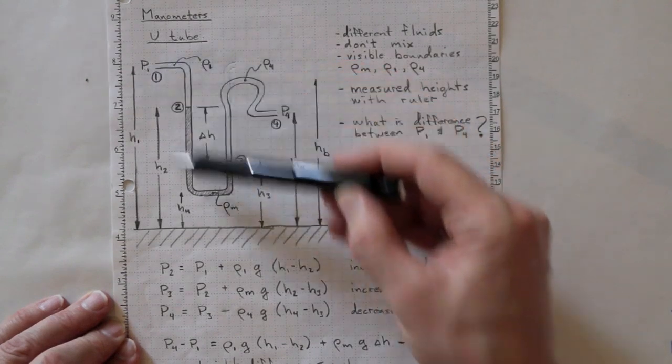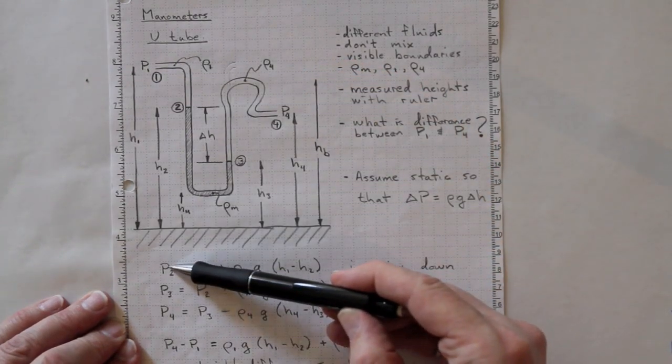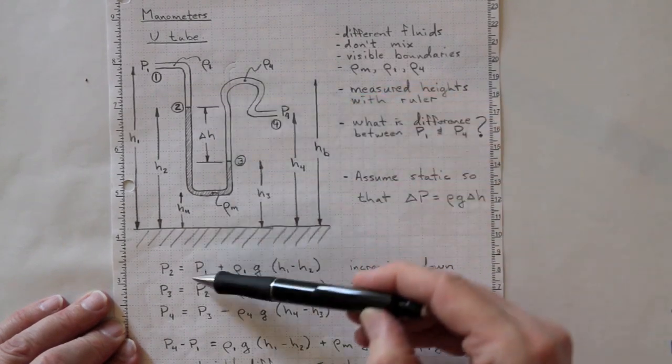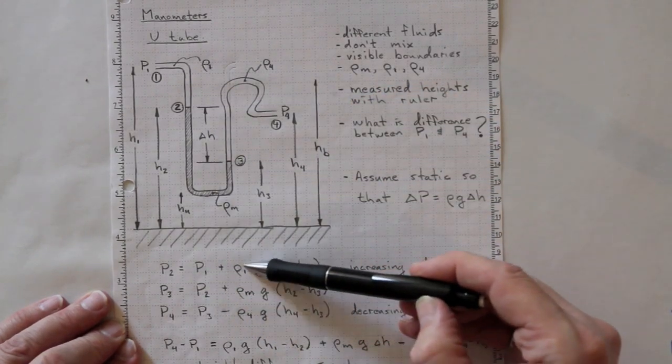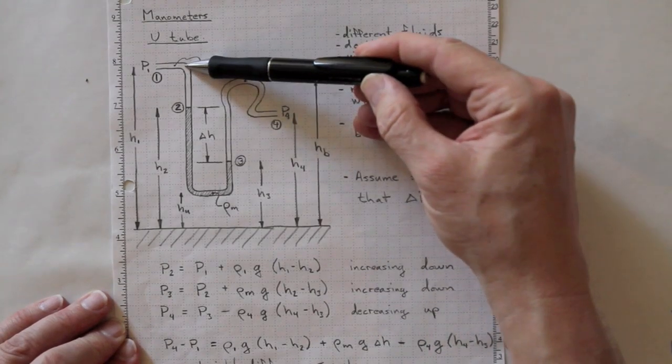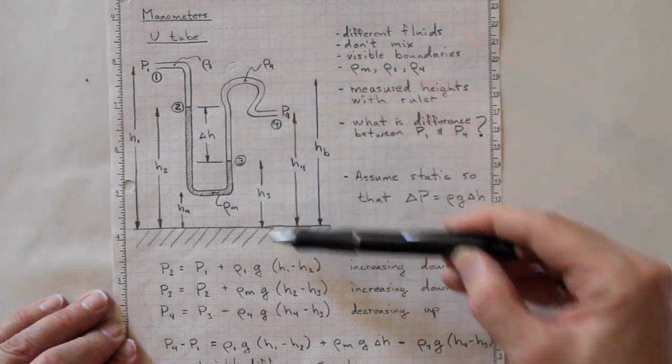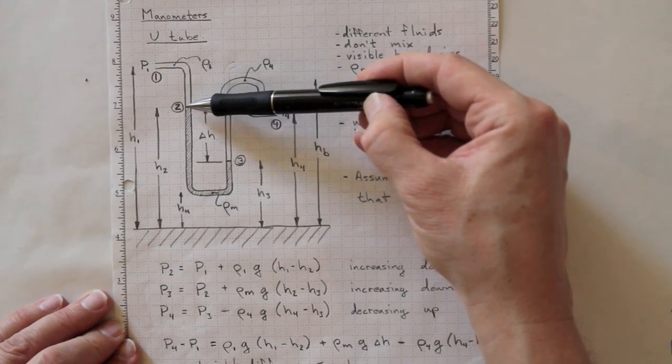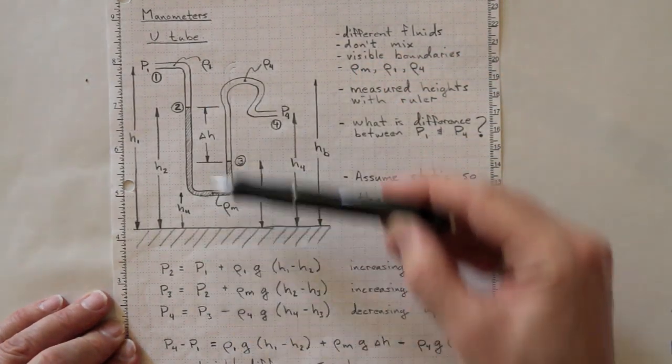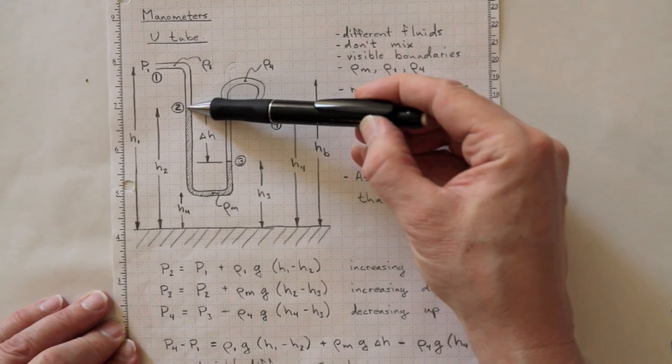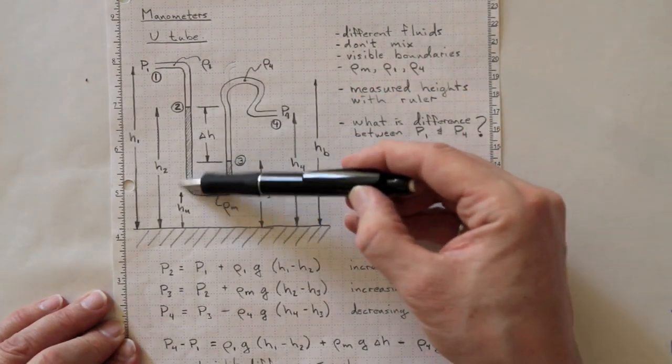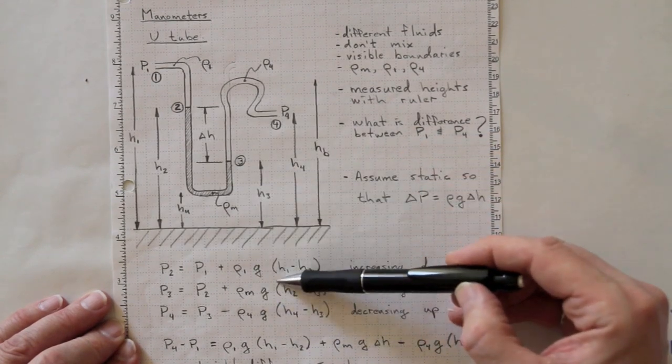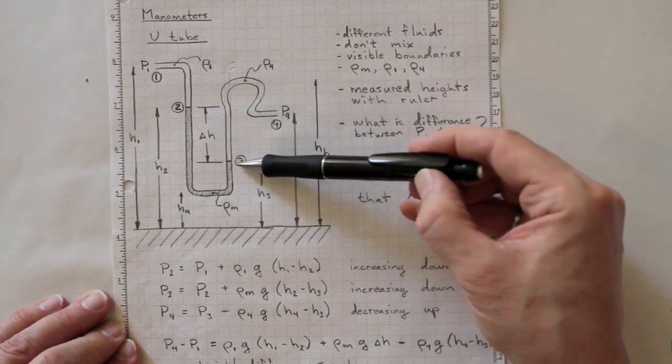So let's walk around the tube from P1. P2, the pressure at this location here, will be P1 plus rho 1 times G times H1 minus H2, increasing as we go down here. P3 will be equal to P2 plus the density of whatever this manometer fluid is times G times H2 minus H3.